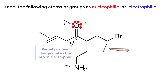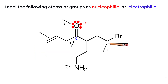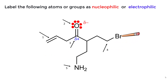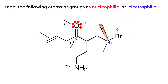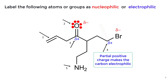The fourth arrow is pointing to a carbon bonded to a bromine. Since the bromine atom is more electronegative than carbon, the bromine will have a partial negative charge, and the carbon will have a partial positive charge. Since carbon is electron deficient, it is electrophilic and will accept electrons from a nucleophile.